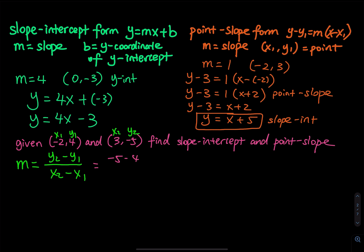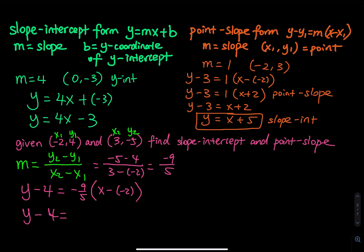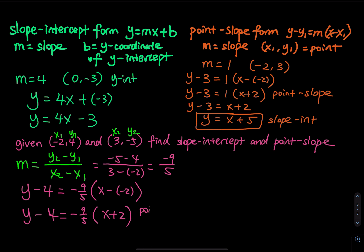So you have negative 5 minus negative 4, divided by 3 minus negative 2. This gives negative 9 over positive 5, and that is your slope. Then you grab one of the points — let's use the first one. You write y minus y1 equals slope times (x minus x1). When you clean up the minuses, y minus negative 4 equals negative 9 over 5 times (x plus 2). So y plus 4 equals negative 9 over 5 times (x plus 2). This is the point-slope form.